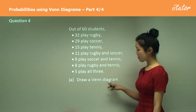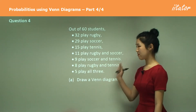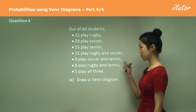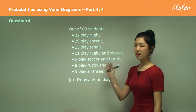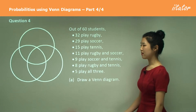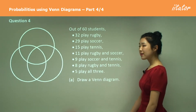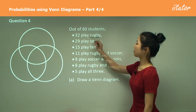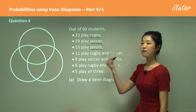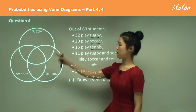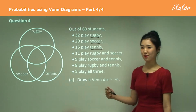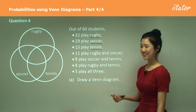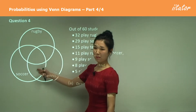But if I draw my Venn diagram for part A, this information is going to be so much more simple. This time we have three circles because we have three different options: rugby, soccer, or tennis — three different sports. There are lots of overlapping parts.